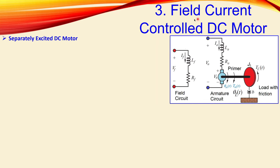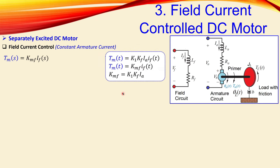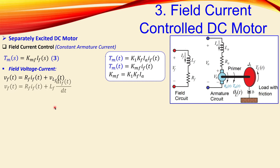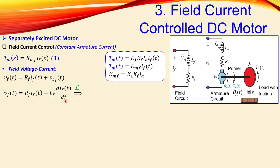Let's look at the field current controlled DC motor — meaning constant armature current. From the Laplace transform, the torque equation is equation (3) with parameters k_mf. Now looking at the field voltage-current relationship using Kirchhoff's voltage law: V_f(t) = L_f · (di_f/dt) + R_f · i_f(t). Applying the Laplace transform with zero initial conditions gives V_f(s) = (L_f · s + R_f) · I_f(s).